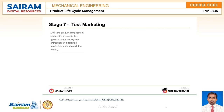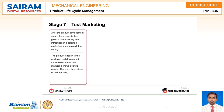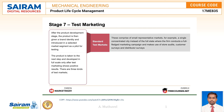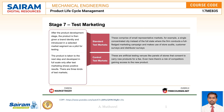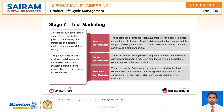Stage seven is test marketing. After product development, the product is given a brand identity and introduced in a selected market segment as a pilot. It is developed at full scale only after test marketing shows positive results. There are three kinds of test markets: standard test markets — small representative markets with full marketing campaigns; controlled test markets — artificial testing venues like panels of stores that carry new products for a fee; and simulated test markets — shopping environments created by the firm to examine customer behavior.